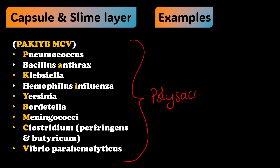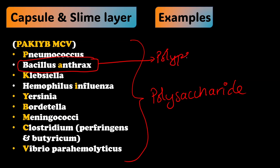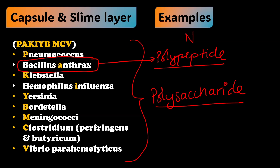You should also remember that all of these capsules are made up of polysaccharides — they are polysaccharide in nature. There is only one exception: Bacillus anthracis. Its capsule is not made up of polysaccharide; it is a polypeptide capsule. So remember — the general rule is polysaccharide capsule, and the exception is Bacillus anthracis which has a polypeptide capsule. That covers the definition and examples, including the composition of the capsule.